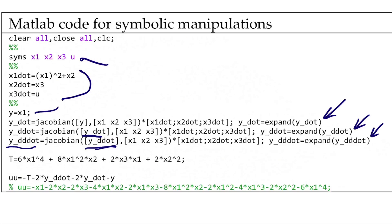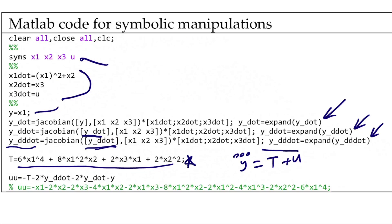At y-triple-dot, we need to see the u term. Y-triple-dot equals T (the confusing expression) plus u. We look at this expression, copy it, define T, and construct the control input u in this manner.